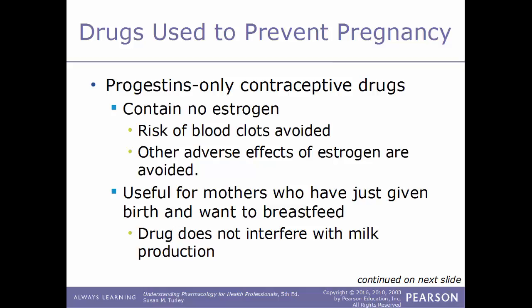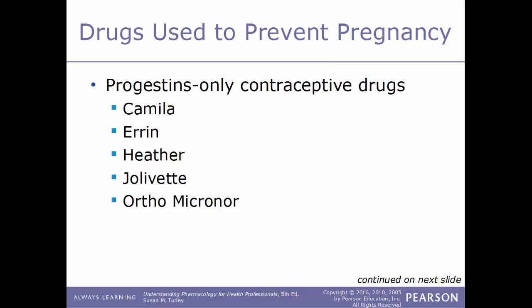Because progestin-only drugs contain no estrogen, the risk of blood clots and other estrogen-related adverse effects is avoided. They are also useful for mothers who have just given birth and want to breastfeed because they do not interfere with milk production. Examples of progestin-only contraceptive drugs include Camilla, Errin, Heather, Jolivette, and Ortho Micronor.